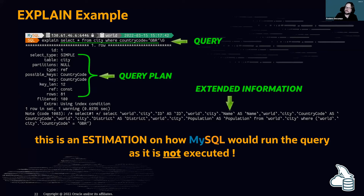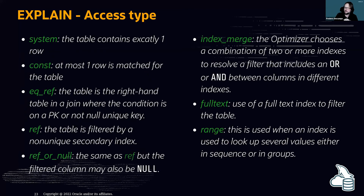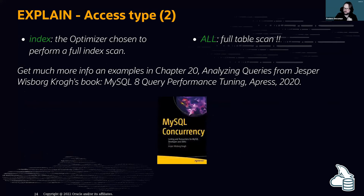The access type column is important. 'ref' means a non-unique index lookup, 'const' means almost one row matches for the table. As a DBA, what you do NOT want to see is 'ALL' — that means a full table scan, which is the scary one that makes MySQL DBAs nervous.